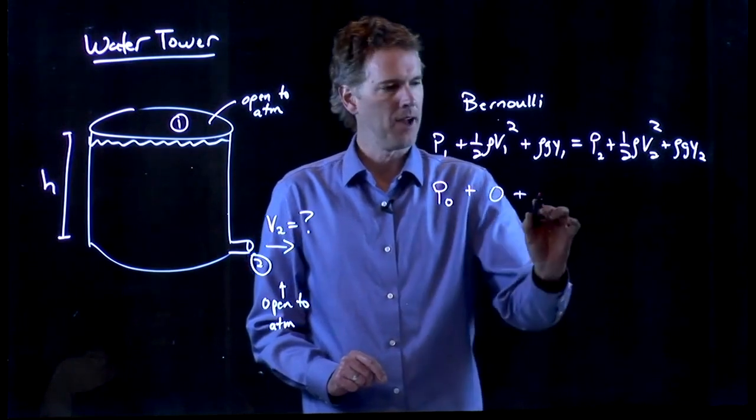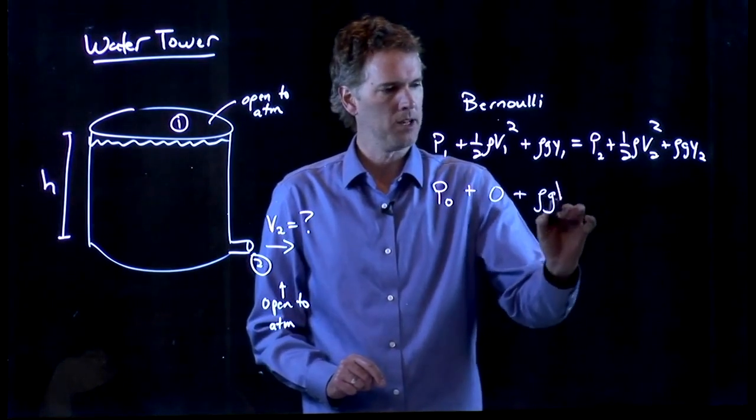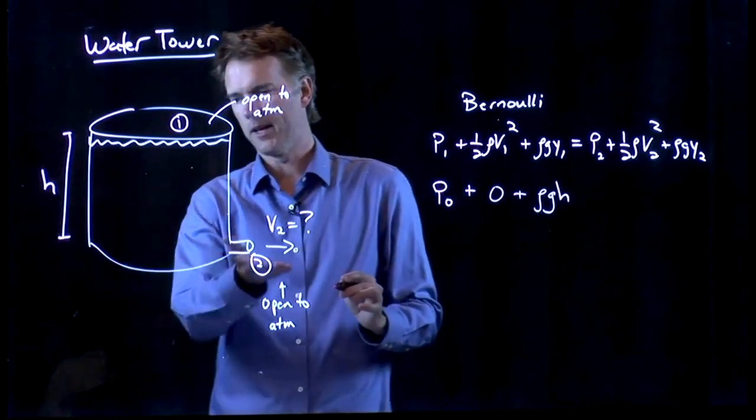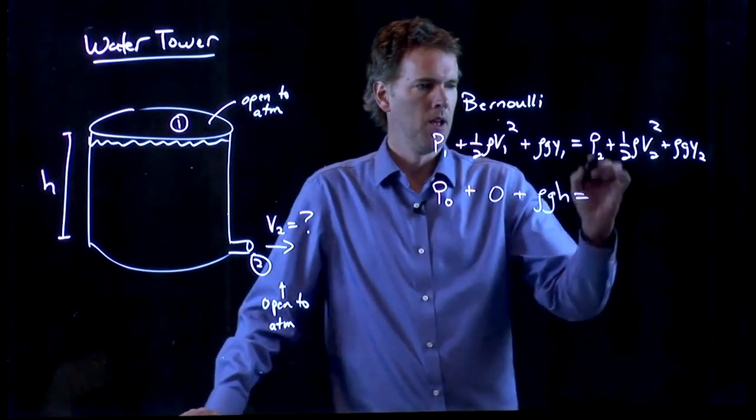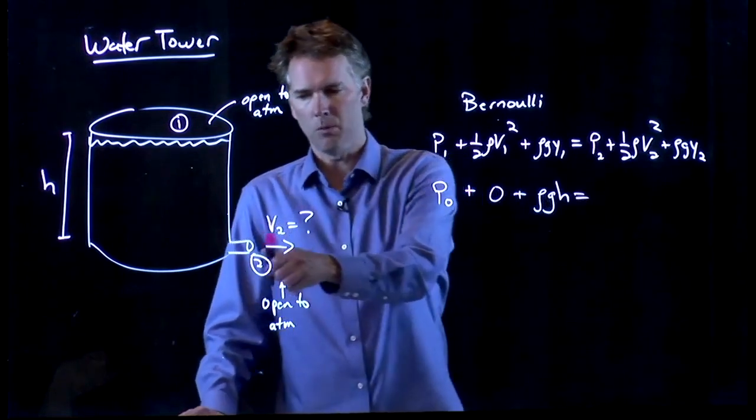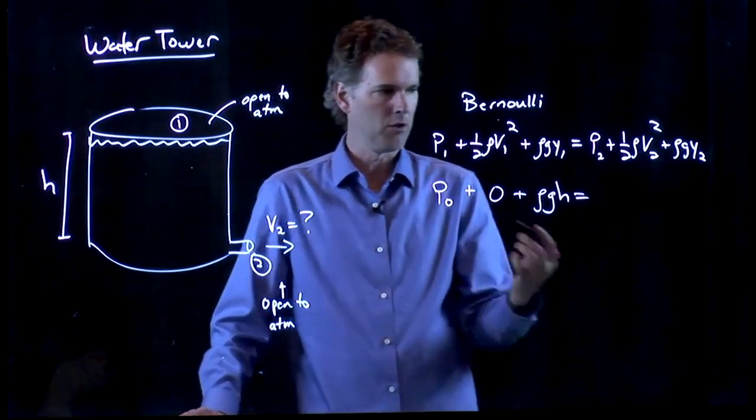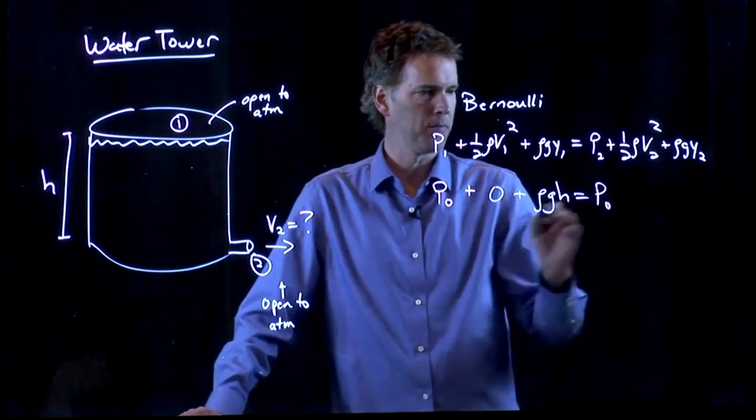We can also say that the height Y1 is just H, we'll make ground level Y equals zero. P2 is what's the pressure in this region. It's also open to the atmosphere. So that's P0.